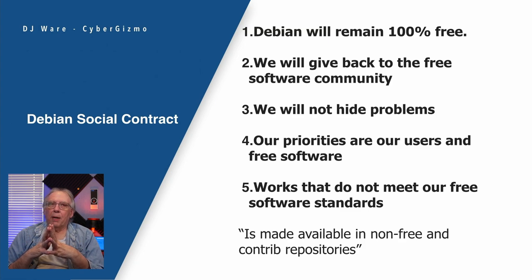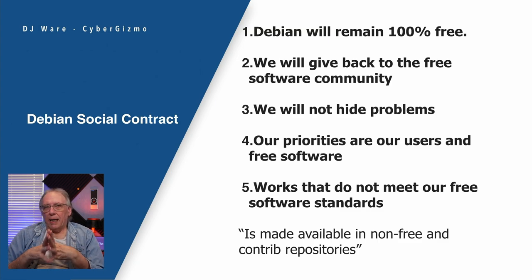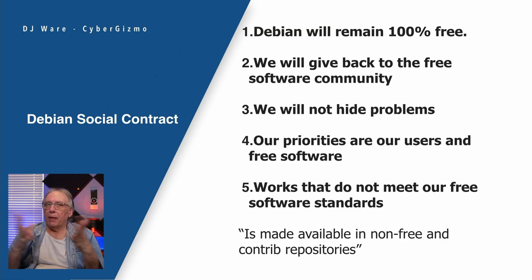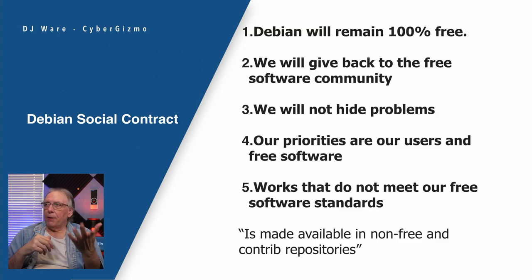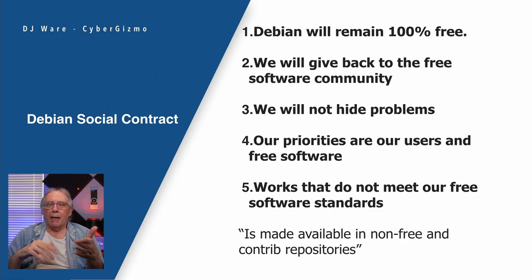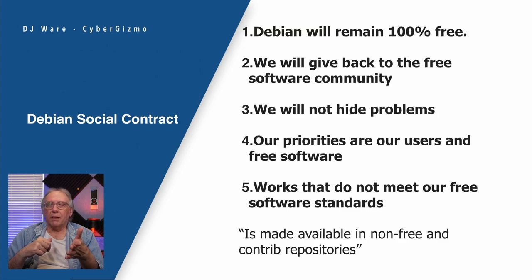Another big point is they won't hide any problems — if they have security flaws, bugs, or things that cause issues, they'll freely admit it and say they're going to fix it. They have always been transparent about those kinds of issues and fast about trying to fix them. Their priorities are to users and to free software. And the fifth point means that works that don't meet their software standards, they'll still provide a way you can include them — Debian does that, and Fedora does too. They provide non-free and contributed repositories so you can add proprietary software if you want.